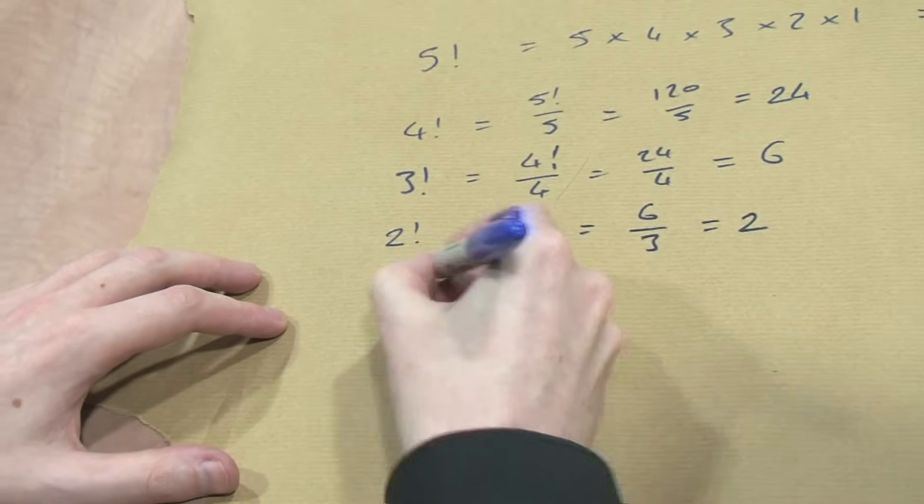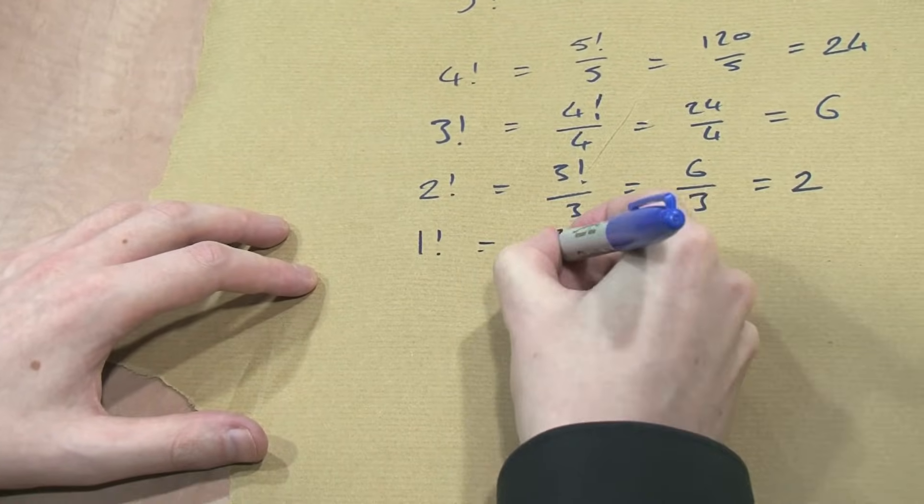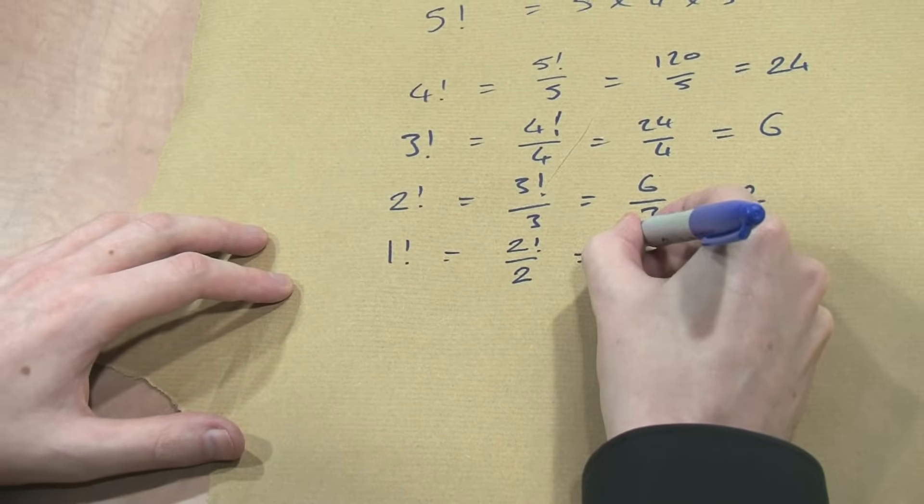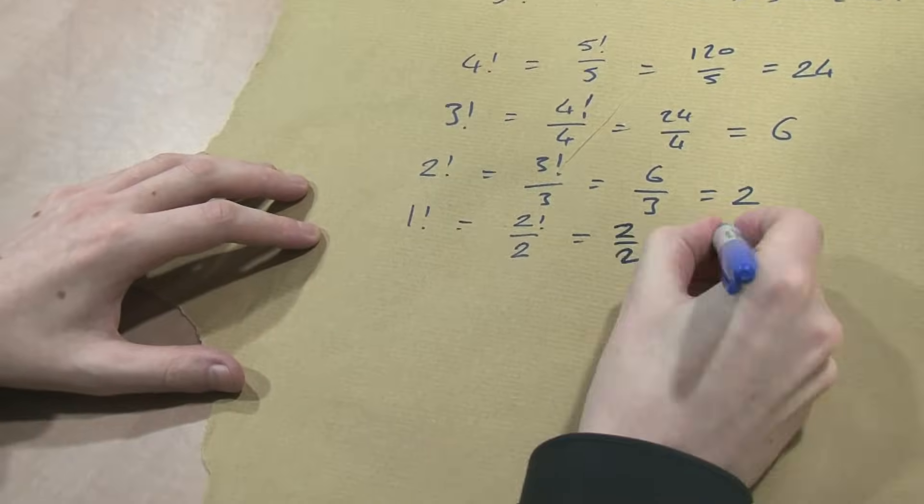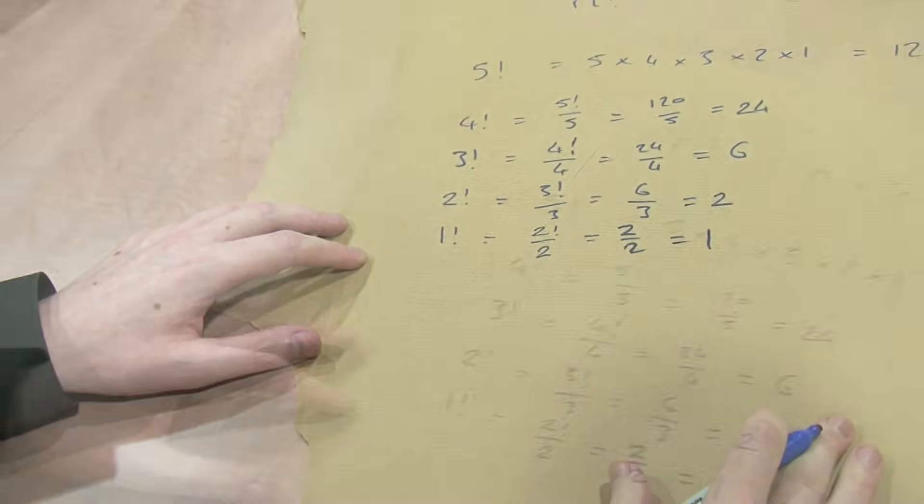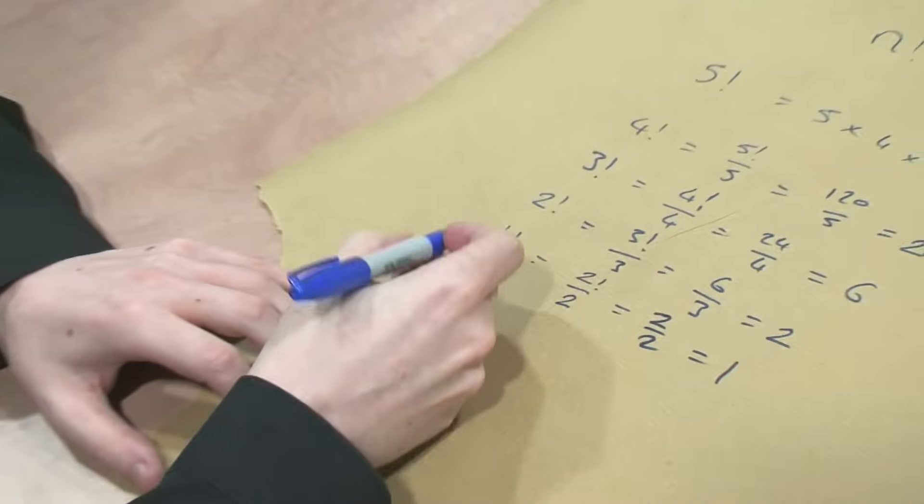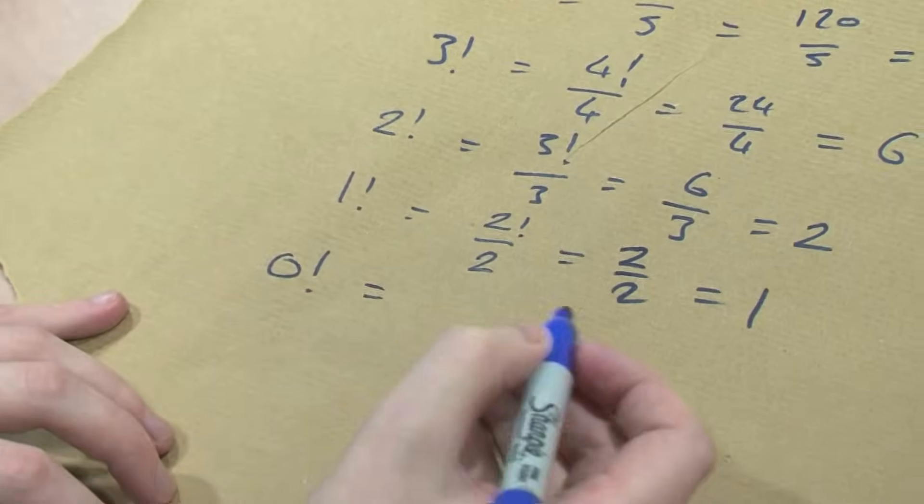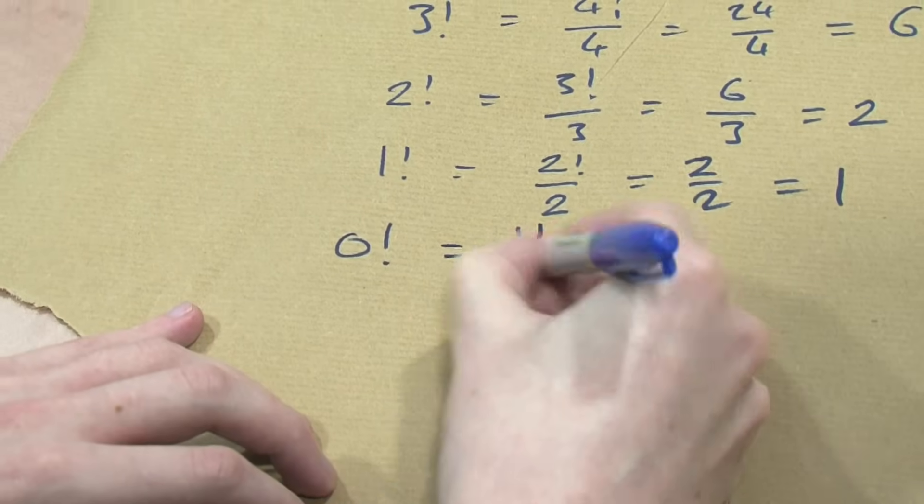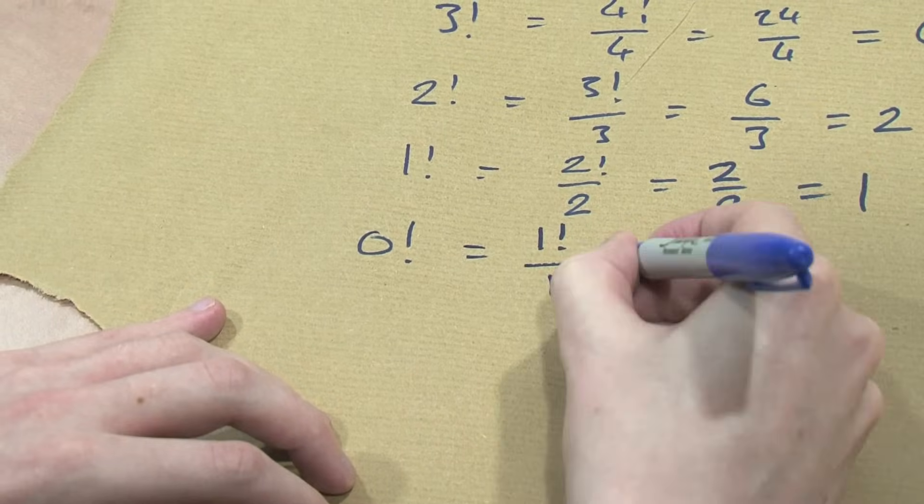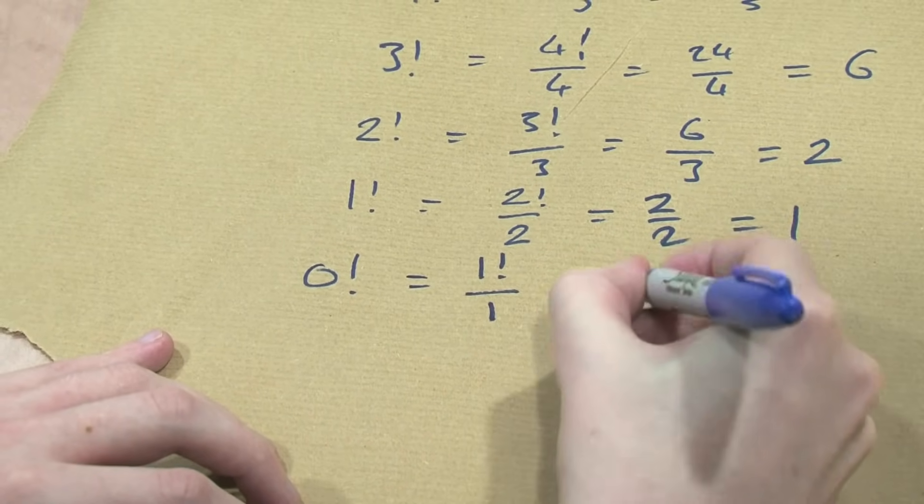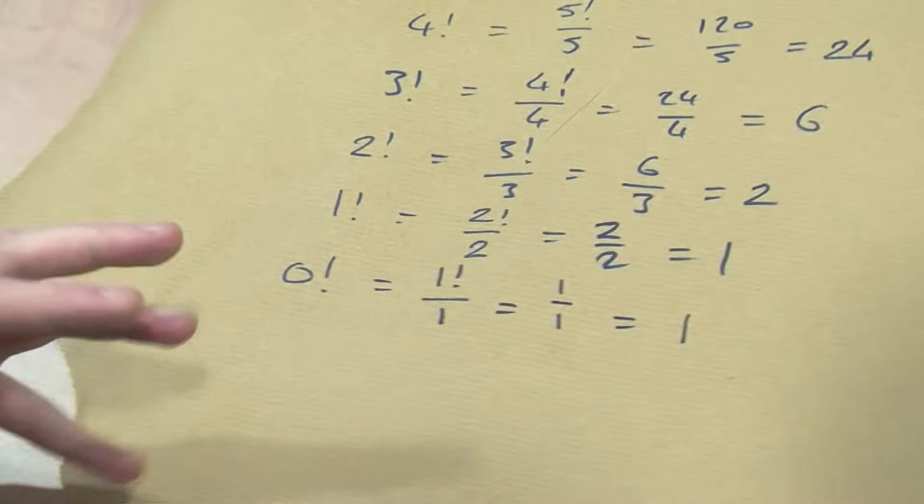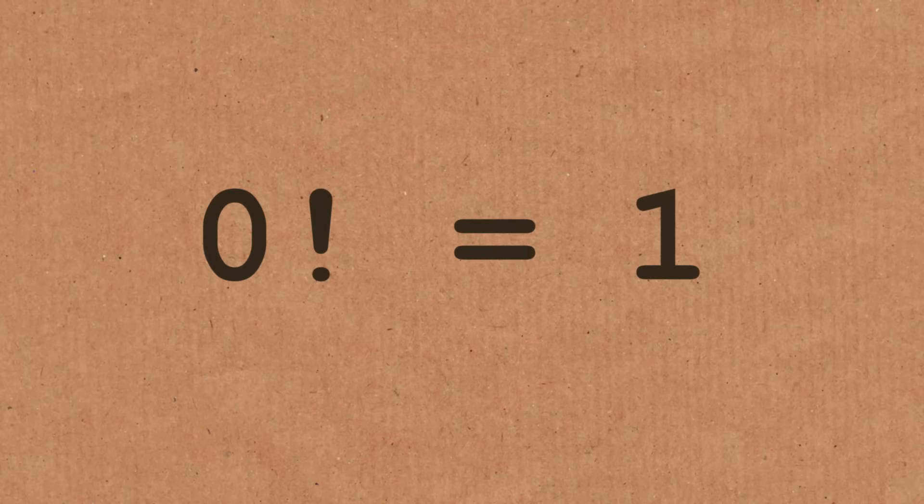1 factorial. Do it again. It's 2 factorial divided by 2. 2 factorial is 2, divided by 2. We've got 2 divided by 2. That's equal to 1. And now this is where it's getting exciting. Do you feel the anticipation? So 0 factorial, we're going to complete the pattern. 0 factorial is 1 factorial divided by 1. 1 factorial is 1. It's 1 divided by 1. And that is equal to 1. So 0 factorial is equal to 1. You complete the pattern.